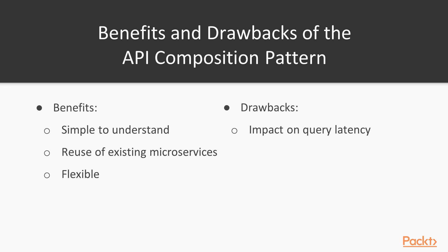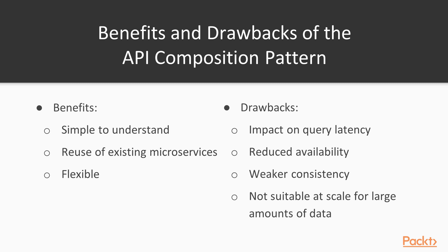That SQL optimization is something we could have used if we had one shared database with many microservices requesting from it. The API composition pattern also reduces the availability of your system, as dependencies on many granular APIs make it brittle to any changes in the called microservices. In addition, it introduces weaker consistency due to the extra processing layer and added delay. It's not suitable for large-scale amounts of data or joining of data, so generally a much preferred pattern is CQRS, which we will talk about later in this section.